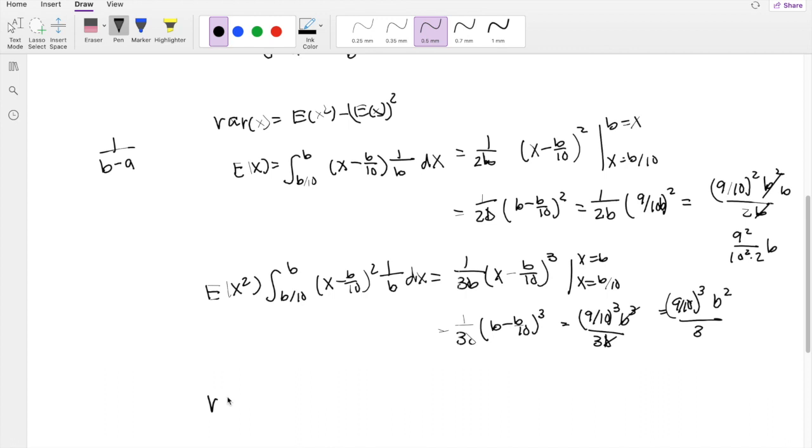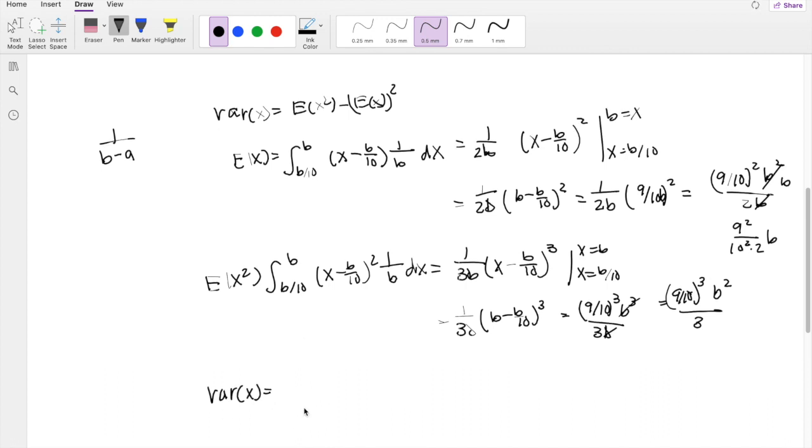So plugging into our variance formula, our variance of x is equal to EX squared, which is, I'm just going to simplify this real quick. So that's 9 over 10 cubed, divided by 3. So that's 0.243B squared minus 9 squared, divided by 200. So that's 0.405B, and this whole thing is squared. So this is equal to 0.078975B squared, or for standard deviation of x, it's just the square root of this number right here, 0.078975B squared. So this is equal to 0.2810B.